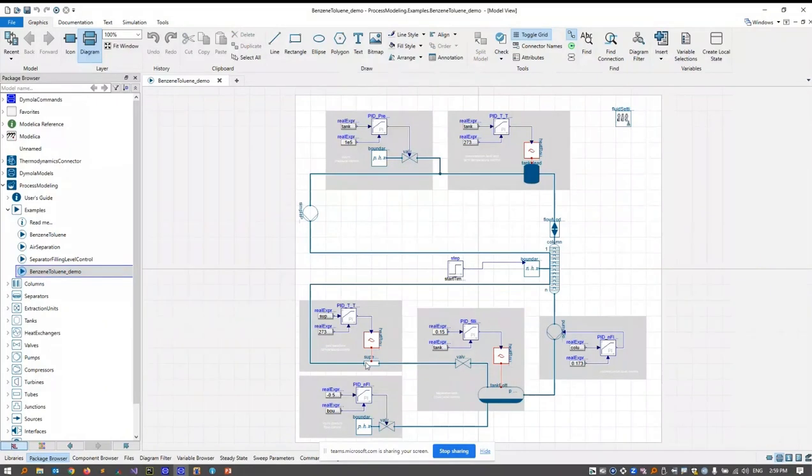This is a simulation of a benzene toluene separation with a column model and different tank models that are used for condensation and evaporation of the products. And there are some other components that are, most of them are controlled with PID controllers. And here is the block for the feed mole flow rate.